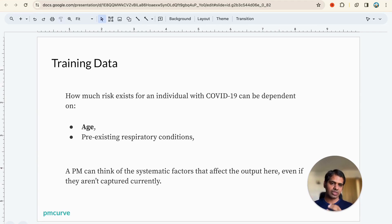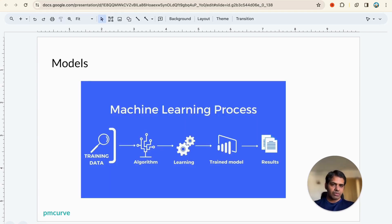A PM can also think about other factors that affect the output. Do weather conditions affect how the risk changes? Does any other illness affect the risk? Or the frequency of interactions with other individuals? PMs can think about additional factors and bring those into picture. Even if these factors are not captured right now, you can give feedback to hospitals who can start capturing that data and the model can be refined on that data.